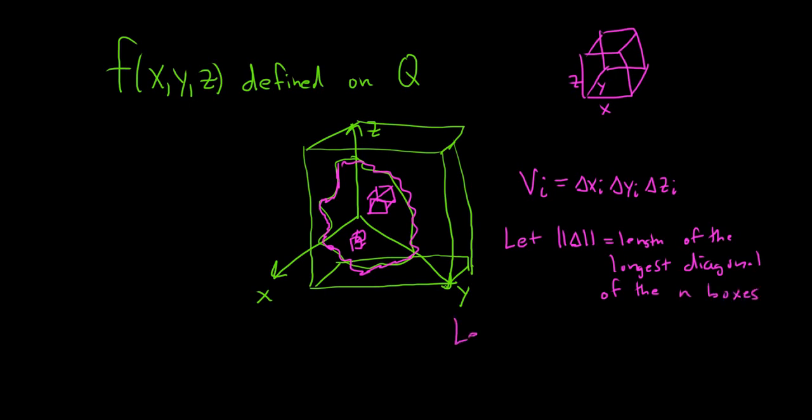So you let the norm go to 0, which is the length of the longest diagonal. So what happens is, if you let the length of the longest diagonal of a box go to 0, that means that the biggest box, its length, the length of its diagonal is going to go to 0. So if the biggest box goes to 0, they all go to 0. So what happens is you get infinitely many boxes covering this solid region here, Q.